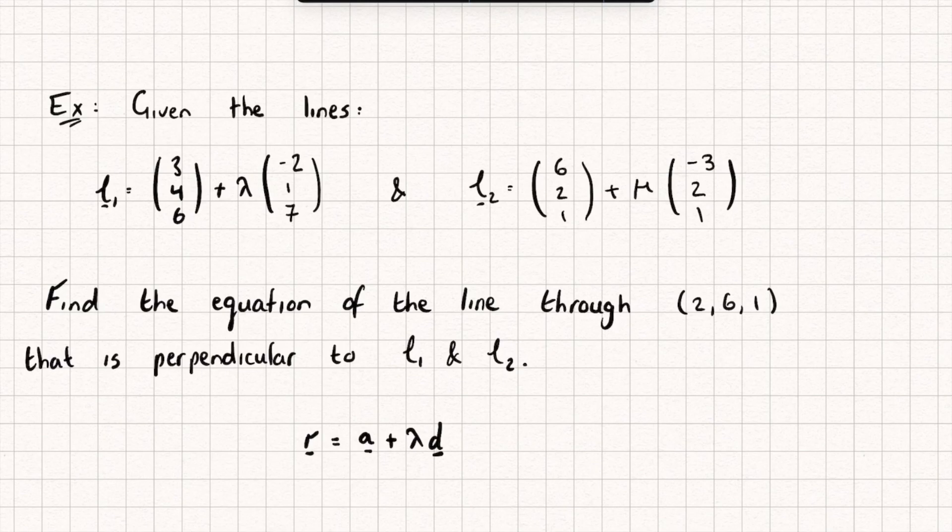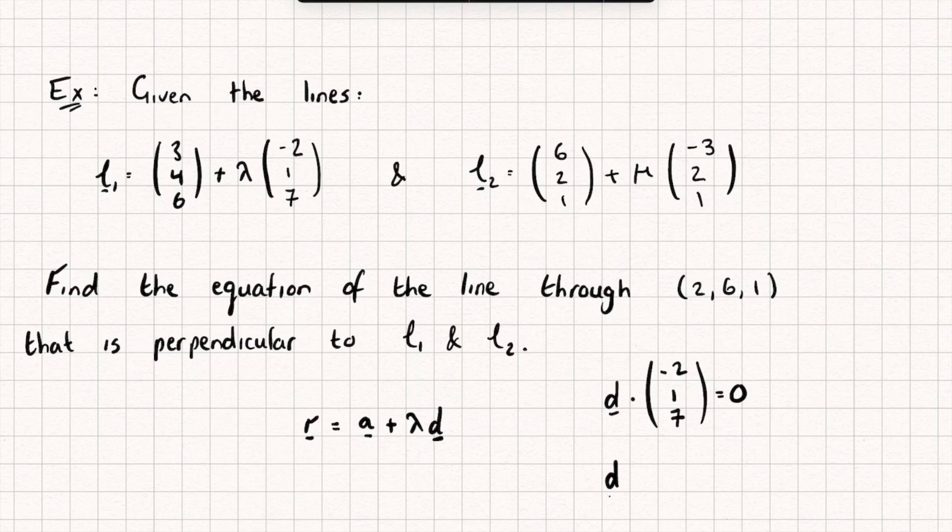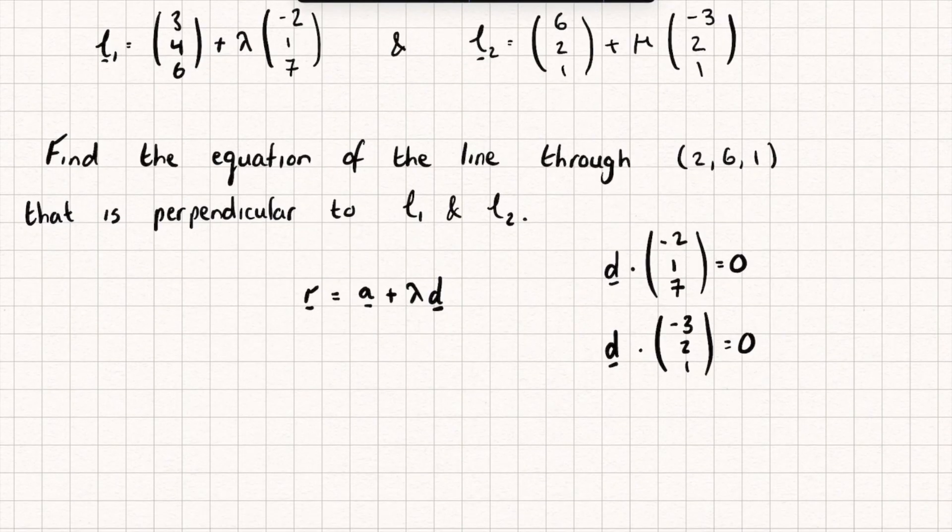Well, let's think, if the line is perpendicular to both line 1 and line 2, that means the direction vector of our new line dotted with the direction vector of line 1, so (-2,1,7), that's got to equal 0 because they're perpendicular to each other. And the direction vector of our new line dotted with the direction vector of line 2 must also be equal to 0 because that is also perpendicular to line 2.